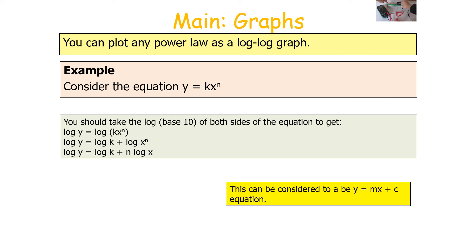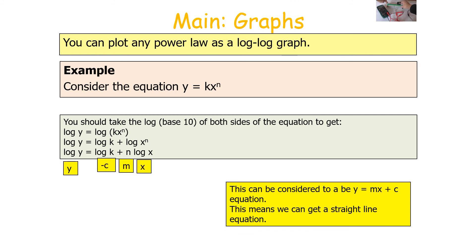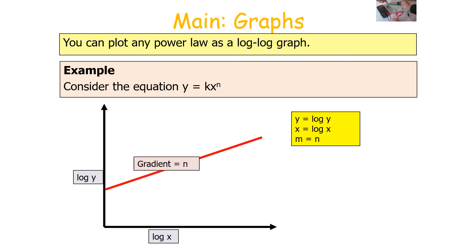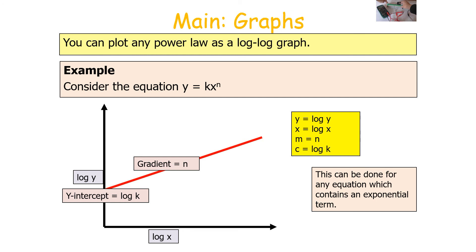This is again in the form Y = MX + C, giving a straight line. With log Y as Y and log X as X, the gradient N equals the power term of the original equation, and the Y-intercept C equals log K. We call this a log-log graph because both the Y-axis and the X-axis are logarithmic terms.